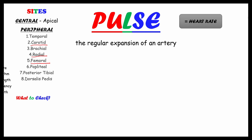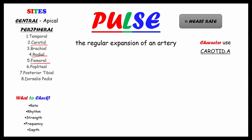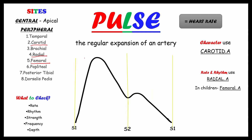What do we check? We have to check rate, rhythm, strength, frequency, and depth. In general, the carotid artery is used to check the character of the pulse, whereas the radial artery is used to check the rate and rhythm, and in young children the femoral artery is used. Now let's see about the pulse pressure graph.